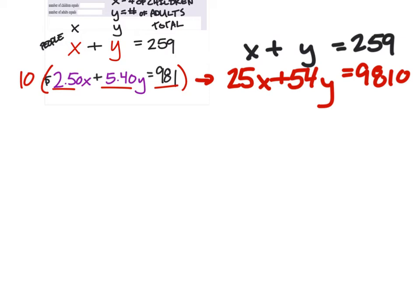So I need the coefficients of X to be the same, but opposites. So I'm going to need to multiply this top equation by 25, but I need to make it negative so it's the opposite. Very good.